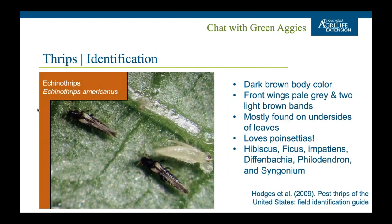Starting with Echinothrips: they have a dark body with a light-colored wing that has a dark band. They're mostly found on the undersides of leaves, along with their immatures. On poinsettias, you'll often find two or three close together on the leaf underside — they almost look like a particle of dust or a poinsettia hair until they start moving. They also get on hibiscus, ficus, and impatiens.